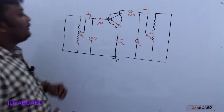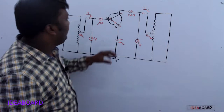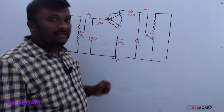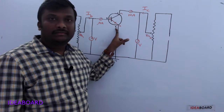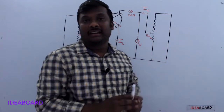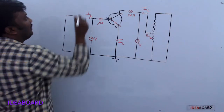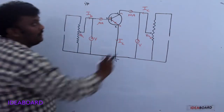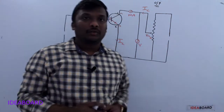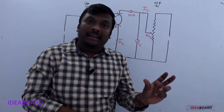This is the circuit diagram for the transistor characteristics. This is an NPN transistor — in an NPN transistor, the arrowhead always indicates the emitter. In common emitter configuration, the emitter is common for both input and output. This portion is taken as input and this portion is taken as output.